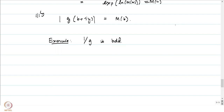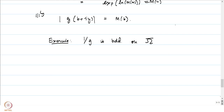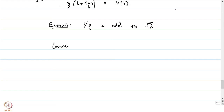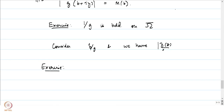Once we have g, consider the function F/g. This satisfies the exact same conditions as before, and by applying the result for the M(a) = M(b) = 1 case, we conclude |F(z)/g(z)| ≤ 1 for all z in omega-bar. Therefore |F(z)| ≤ |g(z)|, which gives us the inequality M(x)^{b−a} ≤ M(a)^{b−x} · M(b)^{x−a} in the general case.